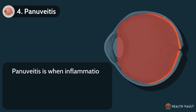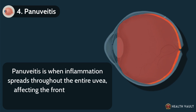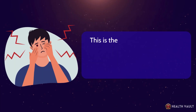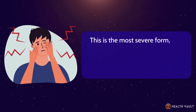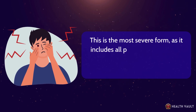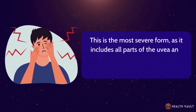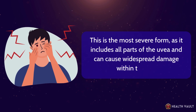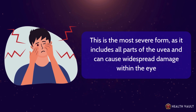Panuveitis is when inflammation spreads throughout the entire uvea, affecting the front, middle, and back of the eye all at once. This is the most severe form, as it includes all parts of the uvea and can cause widespread damage within the eye.